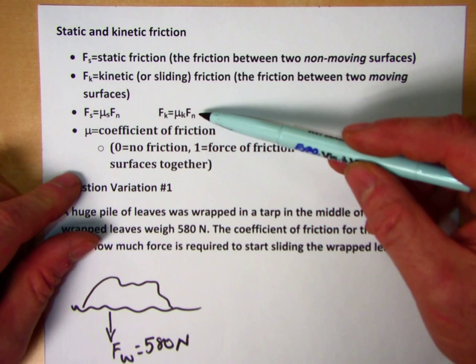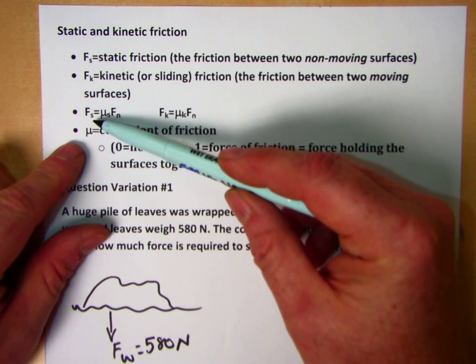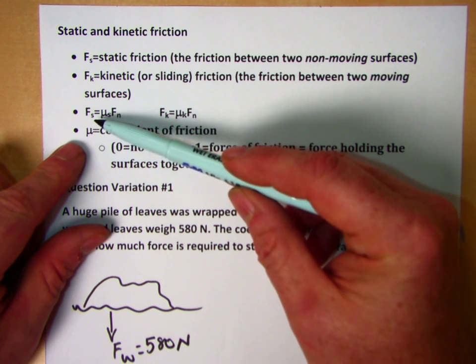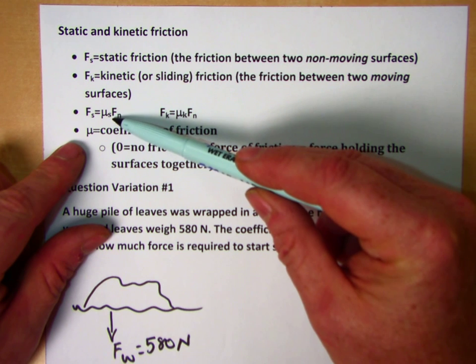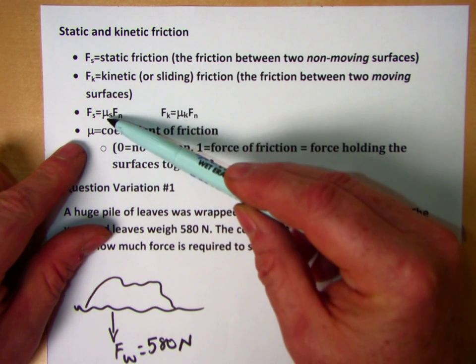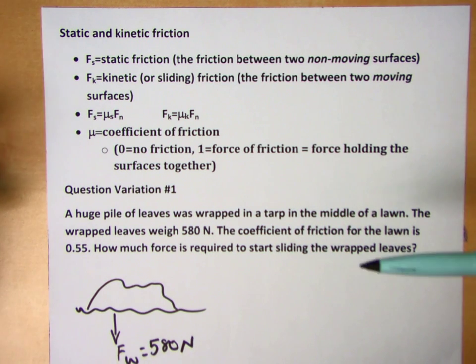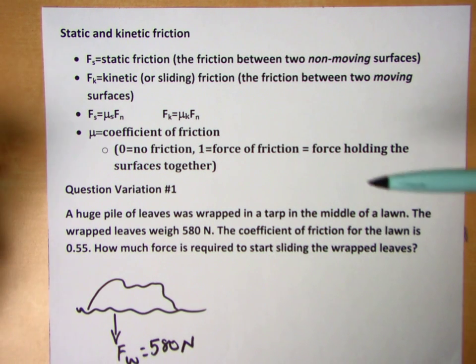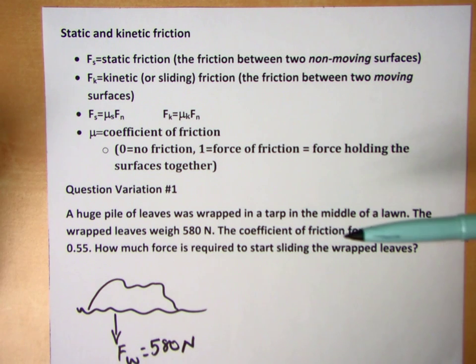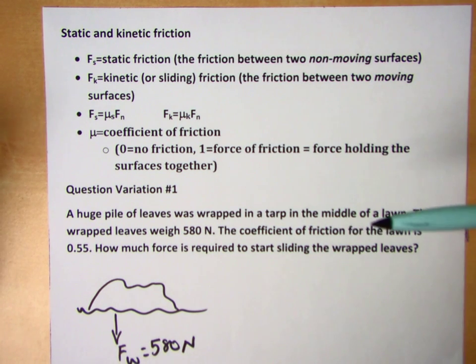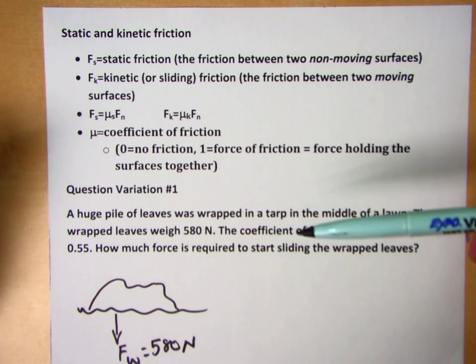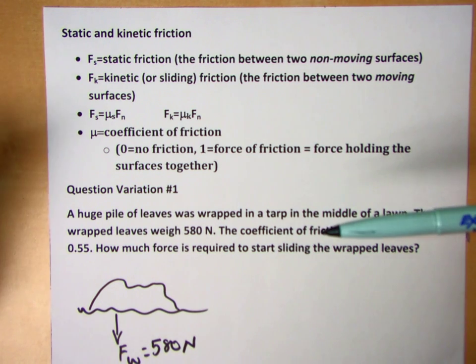We have some basic equations. Force of static friction is Fs, and force of kinetic friction is Fk. Here I've got mu—mu is the coefficient of friction, and it varies depending on what surfaces are involved. So sandpaper and cheese are going to have different coefficients of friction than a hockey puck and ice.